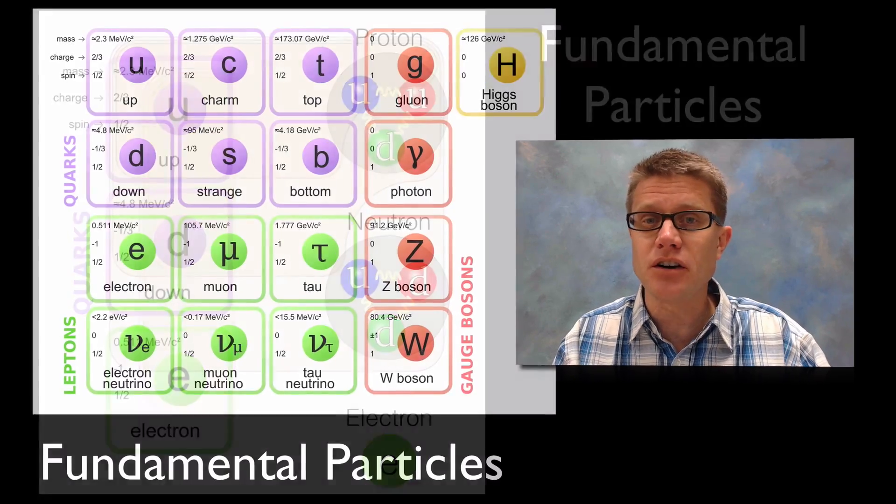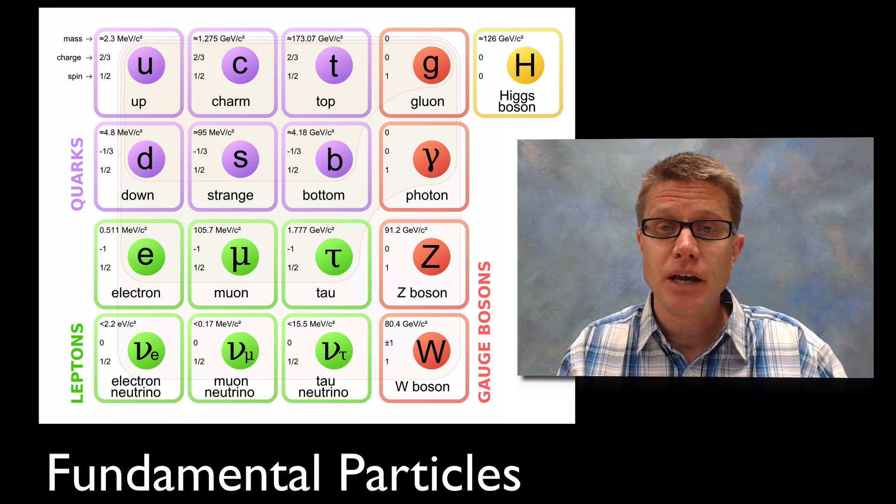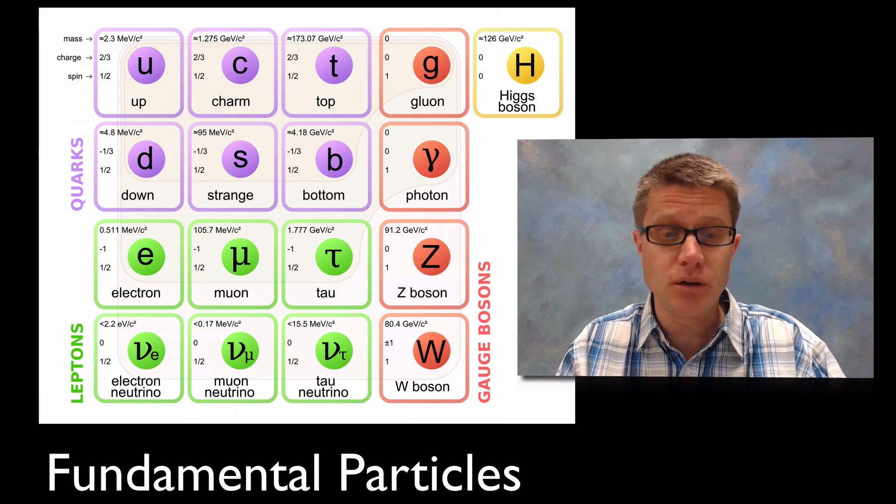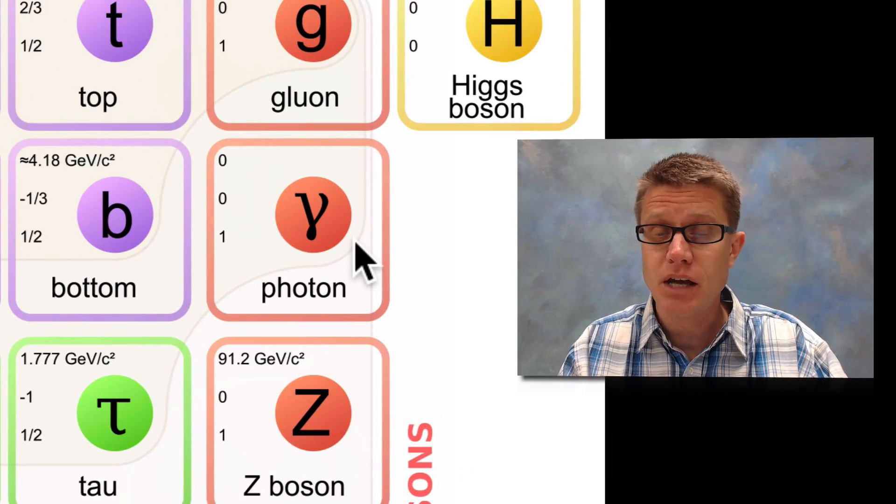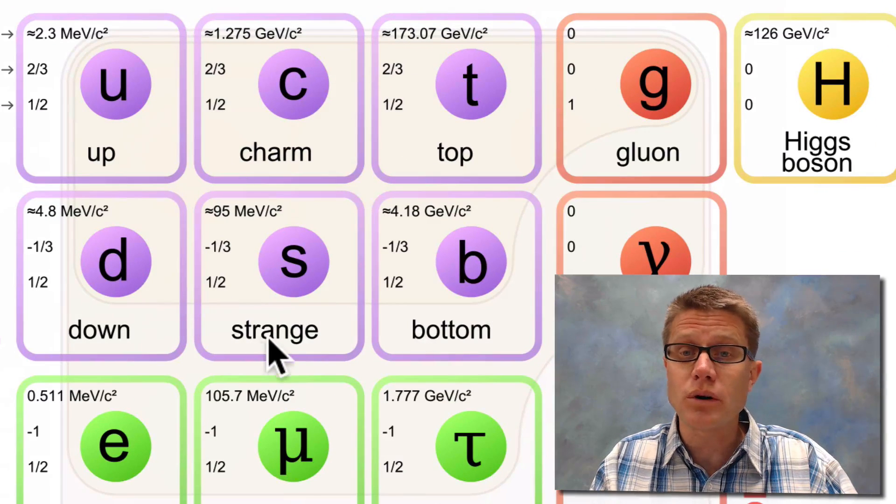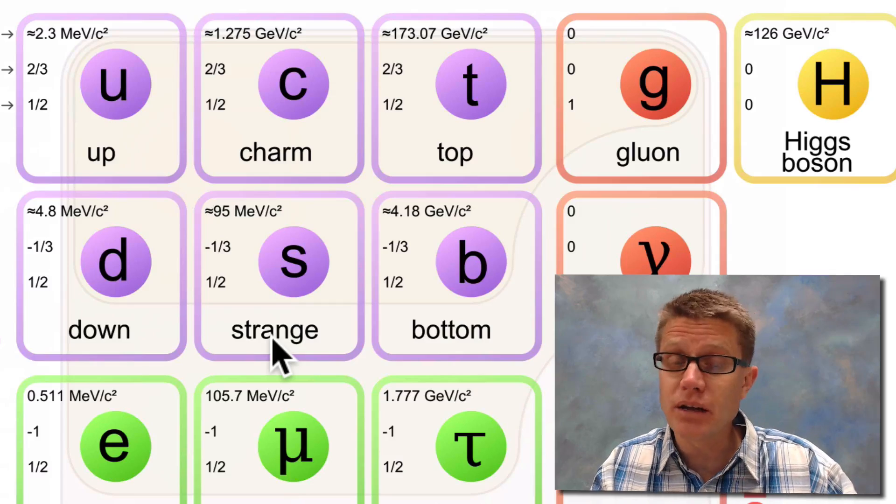And so physicists have come up with this standard model of understanding matter at the subatomic level. And it has spawned all these fundamental particles. Some you are totally familiar with. And so we have got an electron for example, or a photon. Some you have just heard a little bit about, like these six types of quarks that make up matter. But some are brand new to you and are brand new to science.